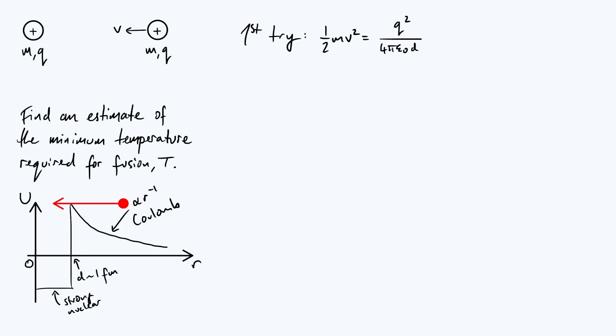But how is that related to temperature? Well the temperature determines the typical speed of a particle, and so we can use the equipartition theorem to say that a typical value of half mv squared is 3 halves of kT, where k is the Boltzmann constant. Now that's a straightforward equation that we can just rearrange for T, and if we do that we find that T is q squared over 6 pi epsilon naught kd, where d is 1 femtometer, or 10 to the minus 15 meters.